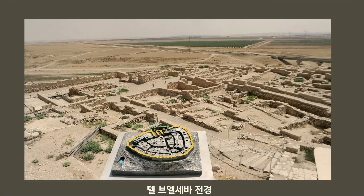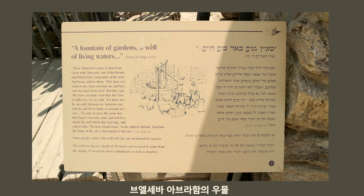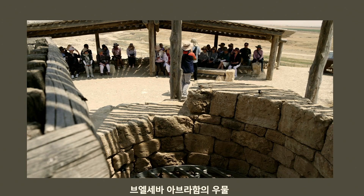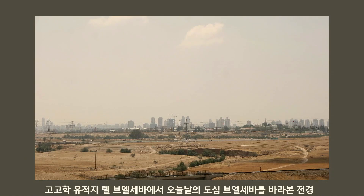부엘세바에는 많은 역사적 사건들이 있어 유적들을 많이 볼 수 있습니다. 텔부엘세바의 전경과 아브라함의 맹세의 우물터가 남아 있는데, 가보면 다소 소박하지만 어쨌든 그 자리를 확인할 수 있습니다. 부엘세바에서 멀리 도시를 바라보는 전경도 볼 수 있습니다.